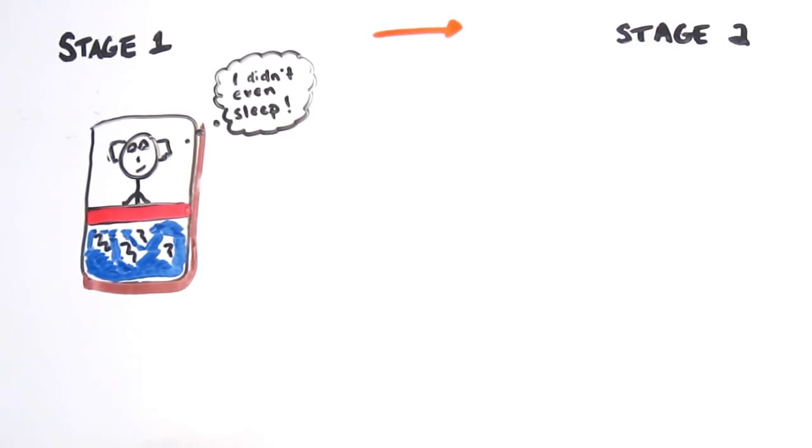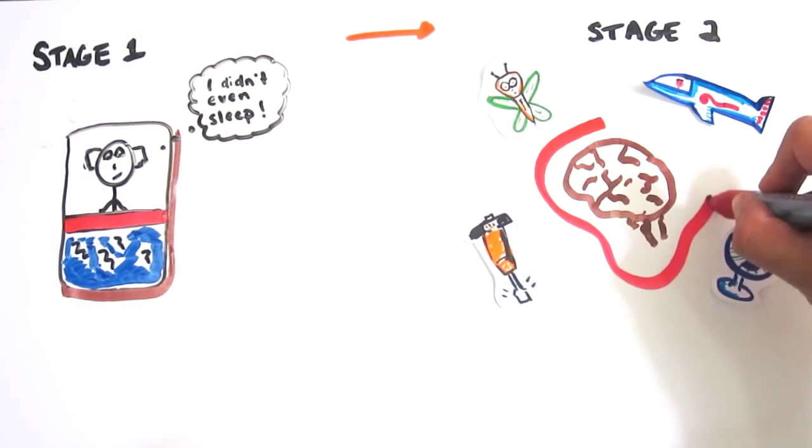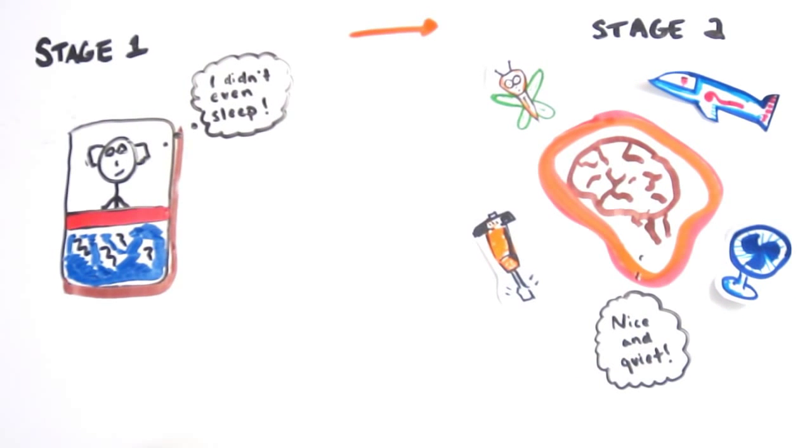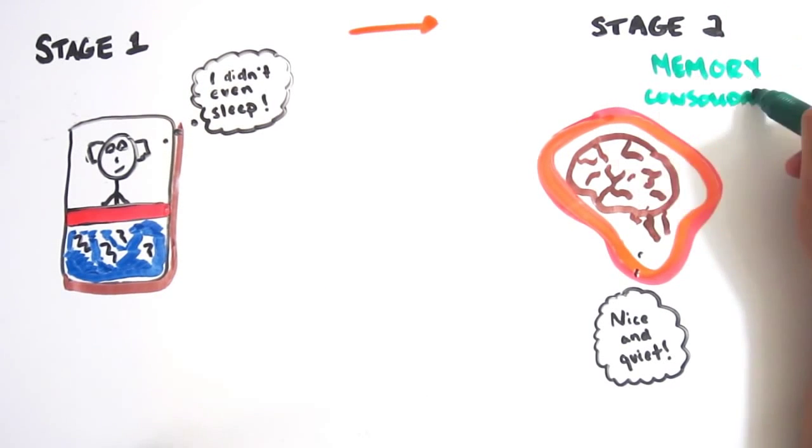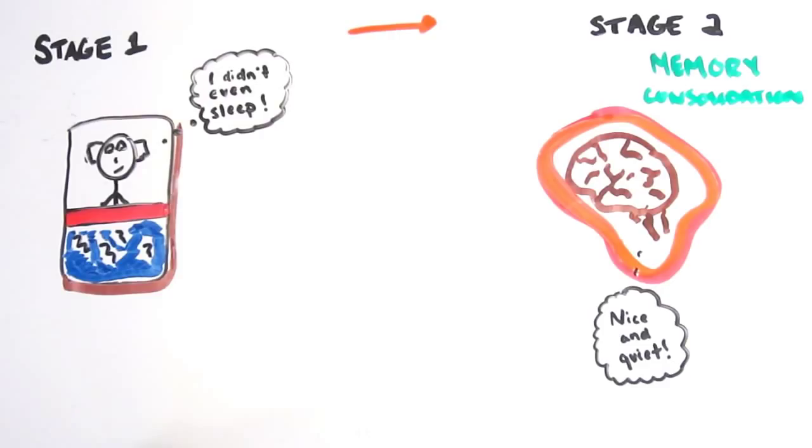But as you continue into stage two, your brain begins to inhibit processing and ignores external stimuli that it deems non-dangerous in order to relax you and give you a tranquil sleep. It also begins memory consolidation, in which information you learned is processed.